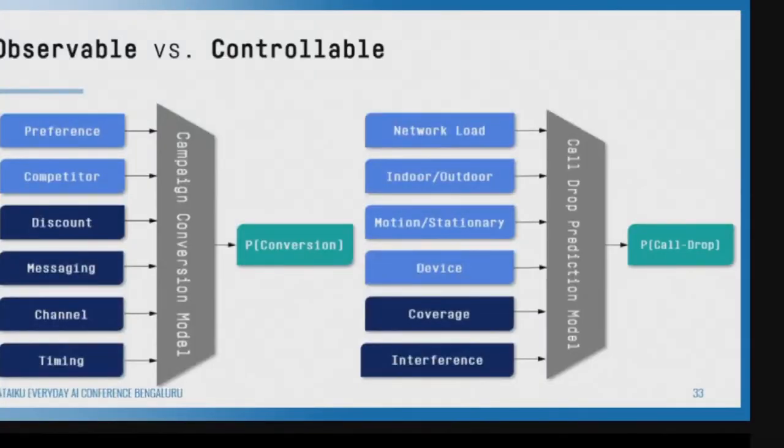In a telecom network, I cannot ask a person moving in a car to stop and make a phone call — that is observable, not controllable. I can observe that they are moving or in a certain part of the city, but I cannot control that. What is controllable is where I put my next cell tower, how I improve coverage and reduce interference.